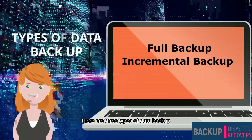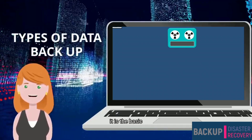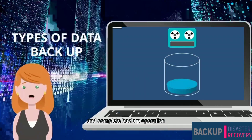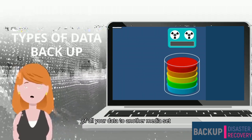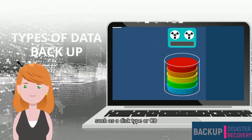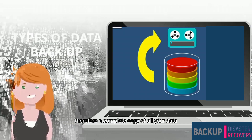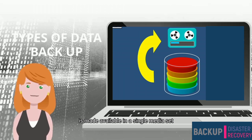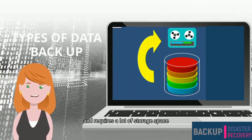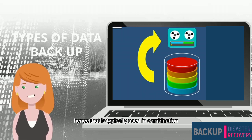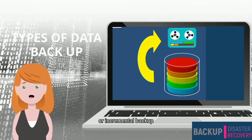There are three types of data backup. The first is the full backup — a basic and complete backup operation that makes a copy of all your data to another media set, such as a disk or CD. A complete copy of all your data is available in a single media set. It takes longer to perform and requires a lot of storage space, so it is typically used in combination with either a differential or incremental backup.